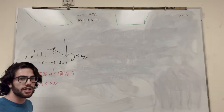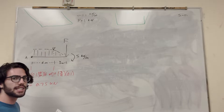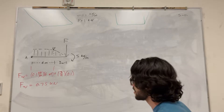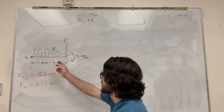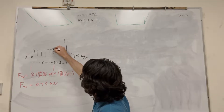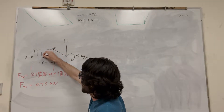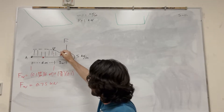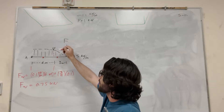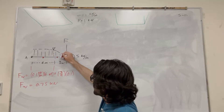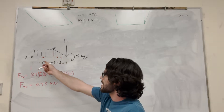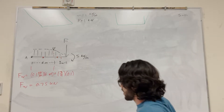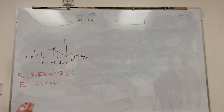Now we know how much force this exerts. For part B we're going to need to know where it acts, so we need to find the center of mass. We'll take force times each center of mass. The center of mass of the rectangular part is at 3 meters. For the triangle, the center of mass is one-third from the far end, so that's 1 meter past the 6-meter mark, giving us 7 meters total.